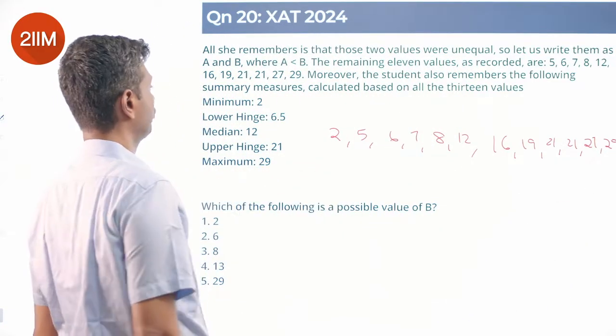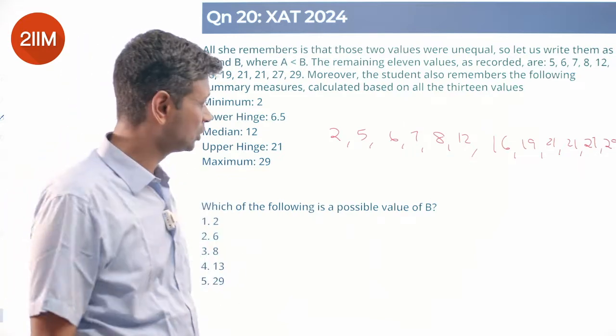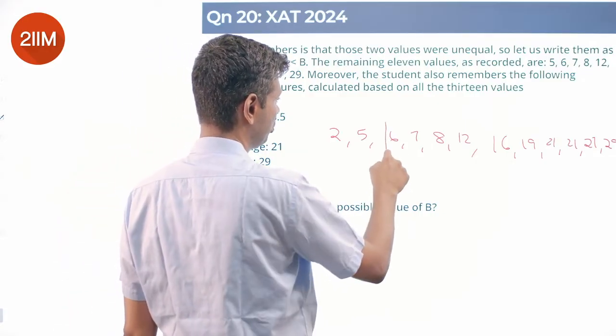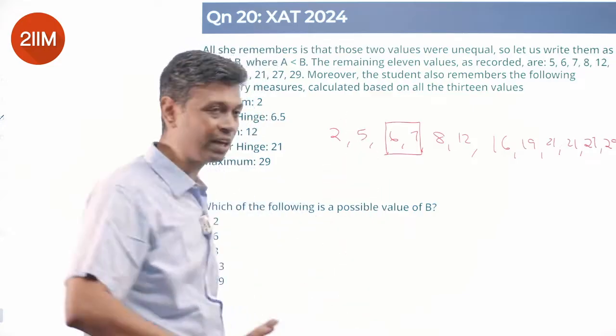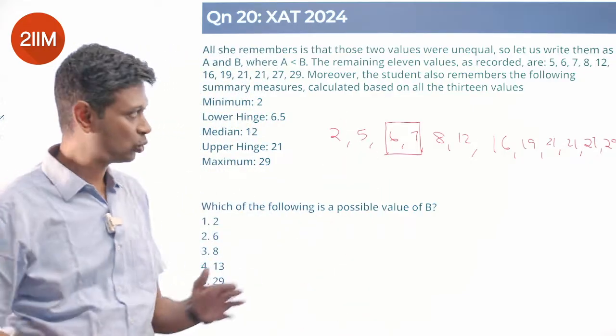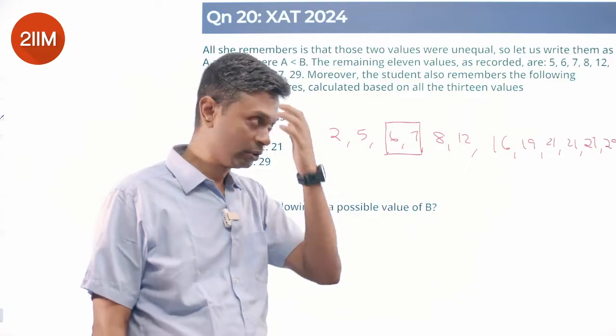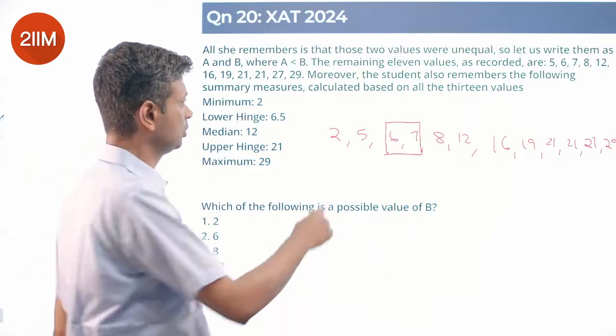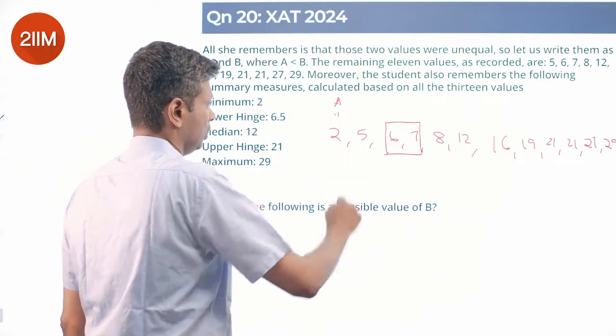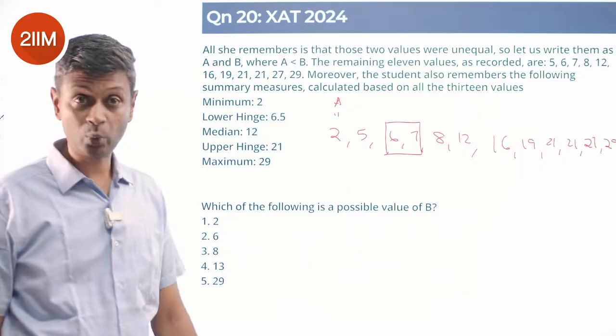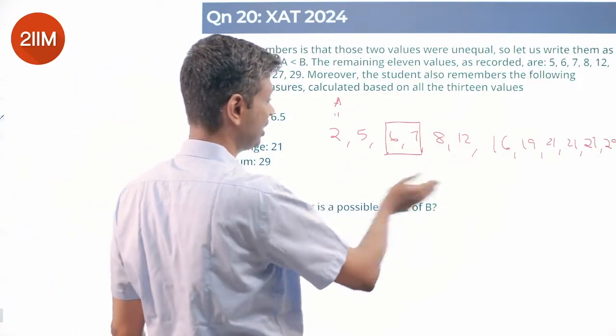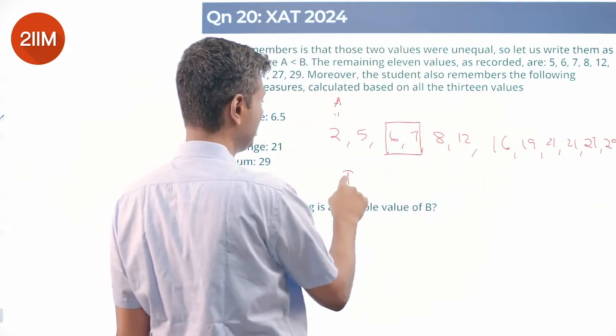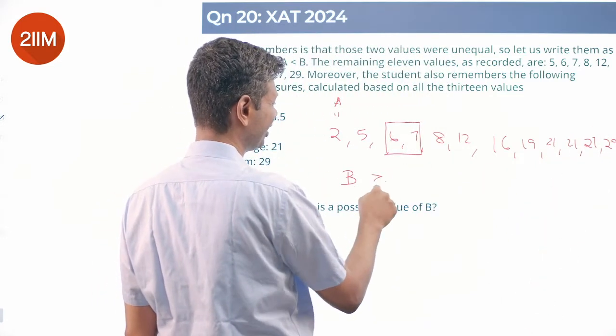B is in between. Lower hinge is 6.5, so average of 6 and 7. These two could be the middle terms. It could be an additional 7 here but not an additional 6, so 7 or more. B is greater than or equal to 7. A is 2, B is greater than or equal to 7. The median is 12, so there should be 6 terms left, should be 6 terms right. 1, 2, 3, 4, 5, 6 are already there, so 6 should be here. B is greater than or equal to 7, B is less than or equal to 12.